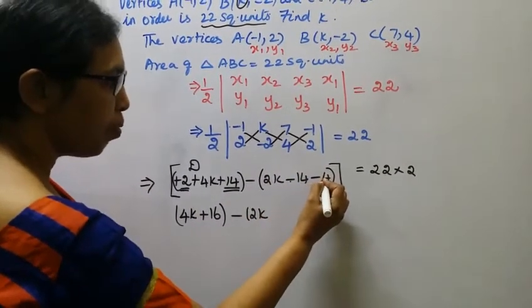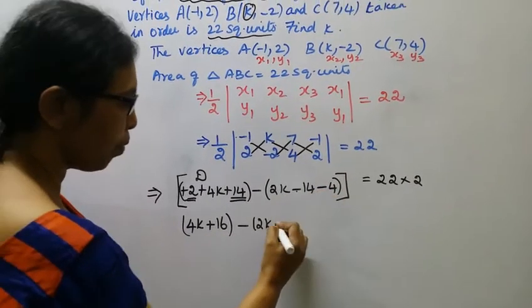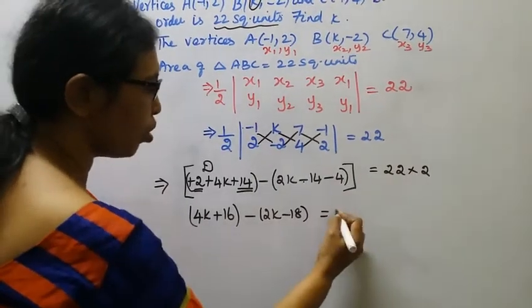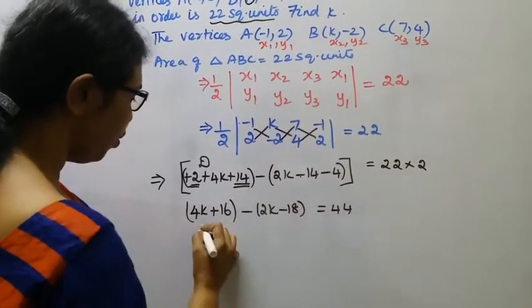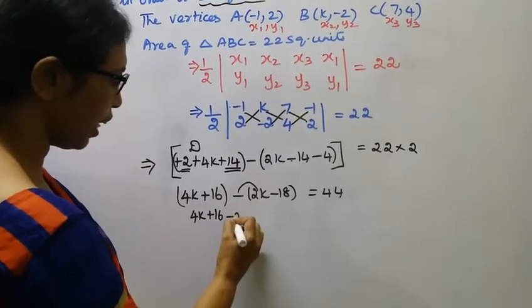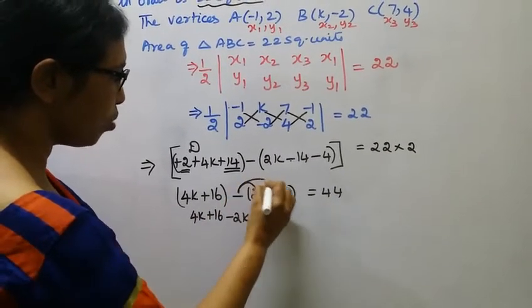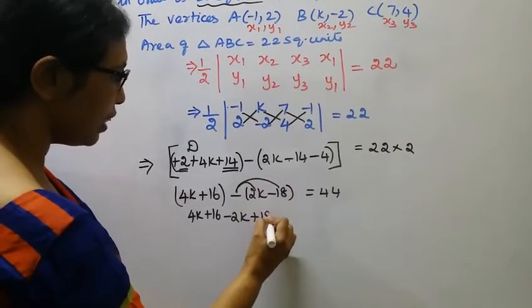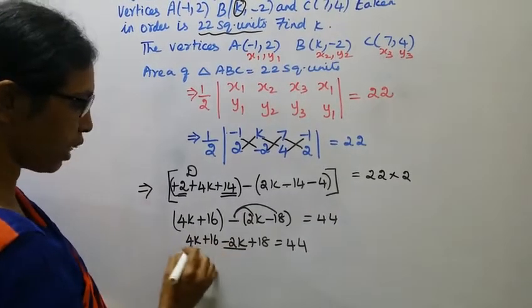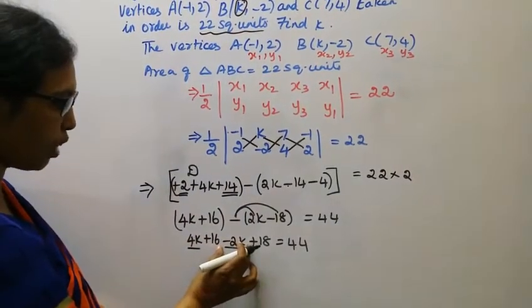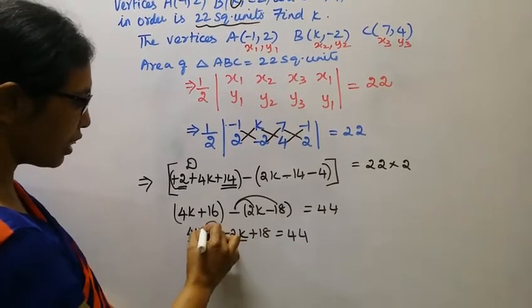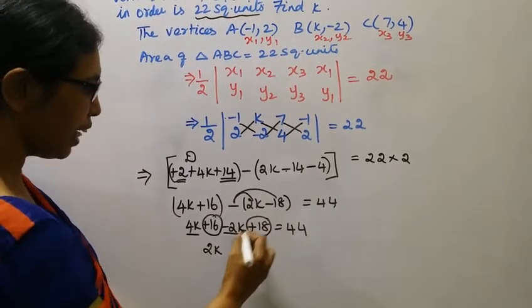4k plus 16 minus 2k, minus into minus is plus 18, equal to 44. Now 4k minus 2k like terms: 4k minus 2k is 2k. 16 plus 18 is 34.